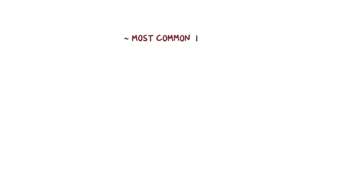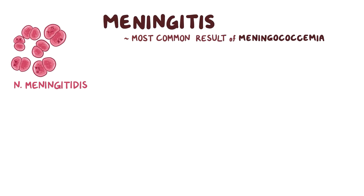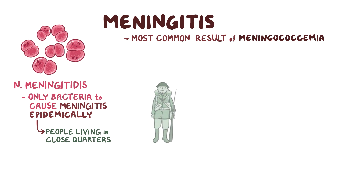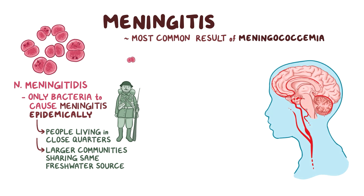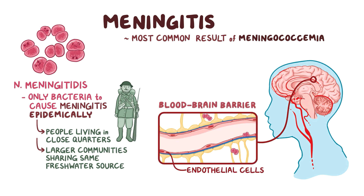Most commonly, meningococcemia results in meningitis. N. meningitidis is actually the only bacteria known to cause meningitis epidemically, most likely in people living in close quarters, like soldiers in a camp, or among larger communities that share the same source of fresh water. Meningitis happens when the bacteria move within the bloodstream up to the brain, and use its toxins to break through the endothelial cells that make up the blood-brain barrier. This way, it gets into the cerebrospinal fluid, or CSF, resulting in meningitis.